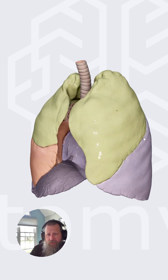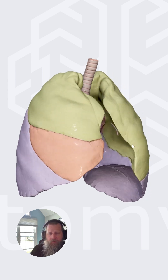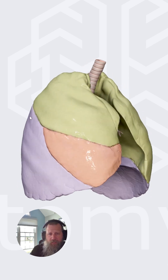This fissure or line or depression that separates the superior from the inferior lobe is known as the oblique fissure, and we can see the oblique fissure over here. This fissure here, or depression that separates the superior lobe from the middle lobe, is known as the horizontal fissure.